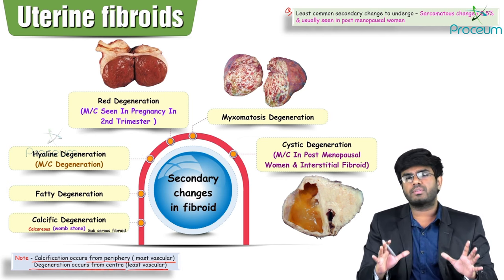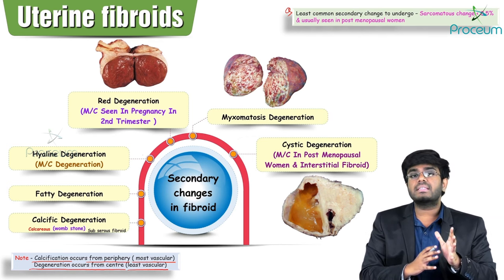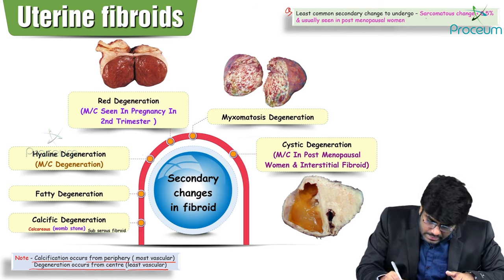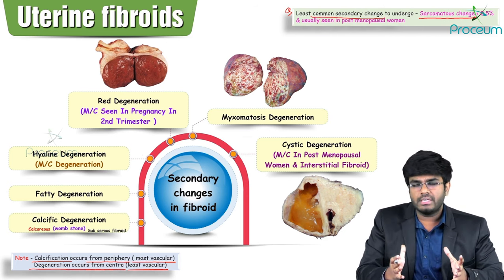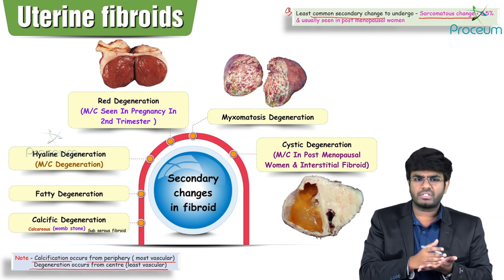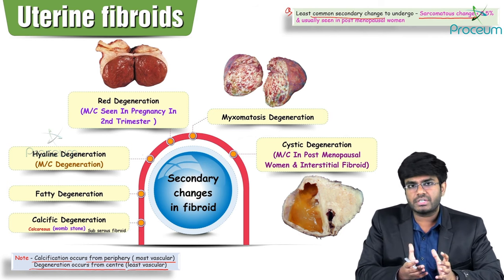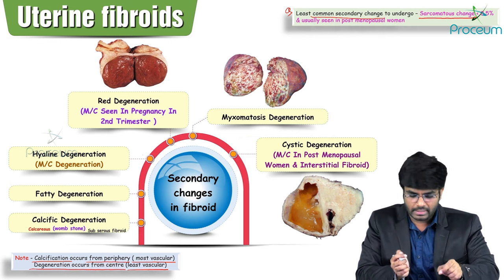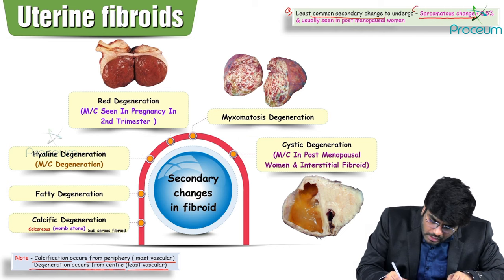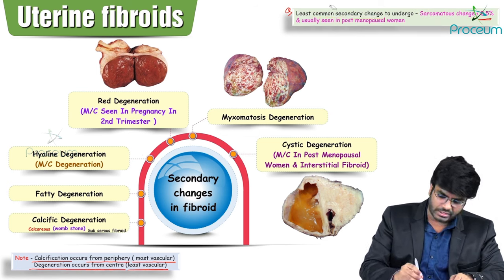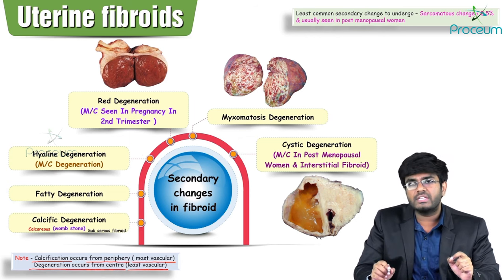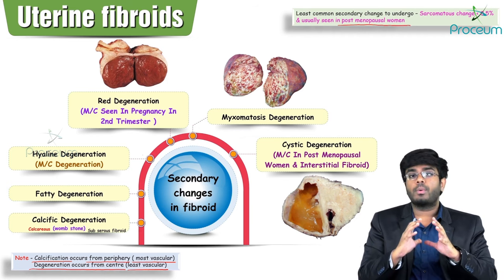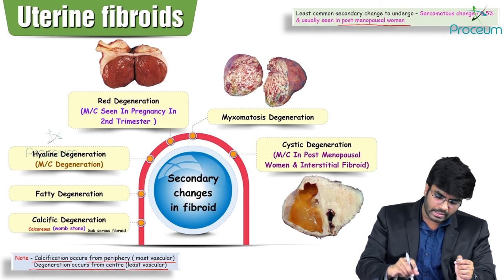Sarcomatous change — malignant transformation of a fibroid — is the least common secondary change, occurring in less than 0.5% of cases. This is most commonly seen in postmenopausal women. So the most common degeneration is hyaline degeneration, and the least common change is sarcomatous transformation.